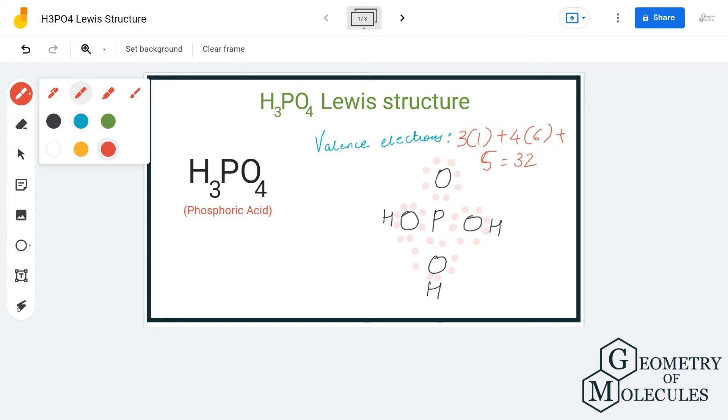But if you calculate the formal charges for this molecule, the phosphorus atom will have a charge of plus one and the oxygen atom will have a charge of minus one. Now we generally try to offer a structure in which formal charges are as close to zero.